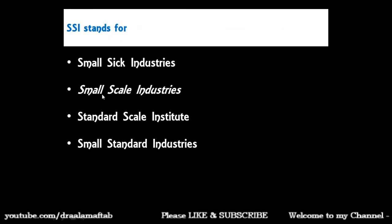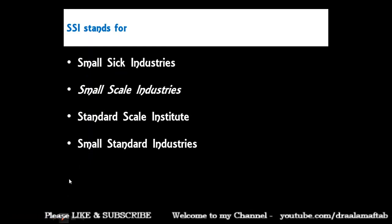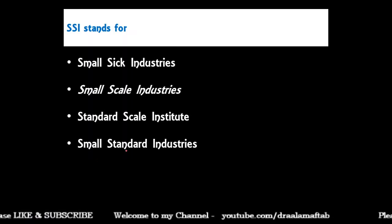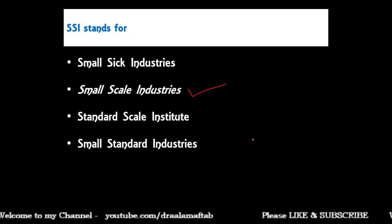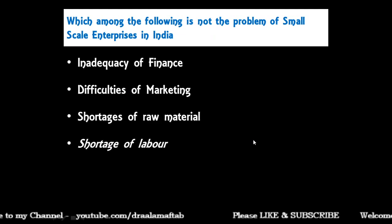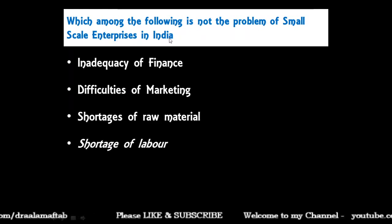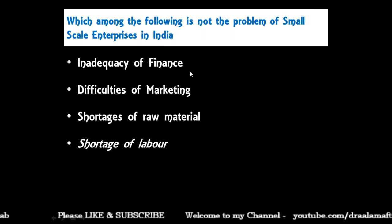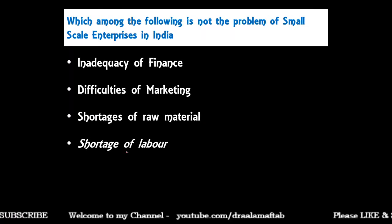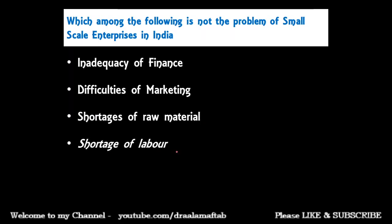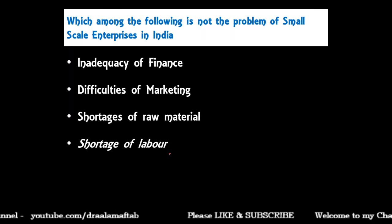SSI stands for: small sick industries, small scale industries, standard scale institute, or small standard industries? The correct answer is small scale industries. Which among the following is not a problem of small scale industries in India: inadequacy of finance, difficulties in marketing, shortage of raw material, or shortage of labor?